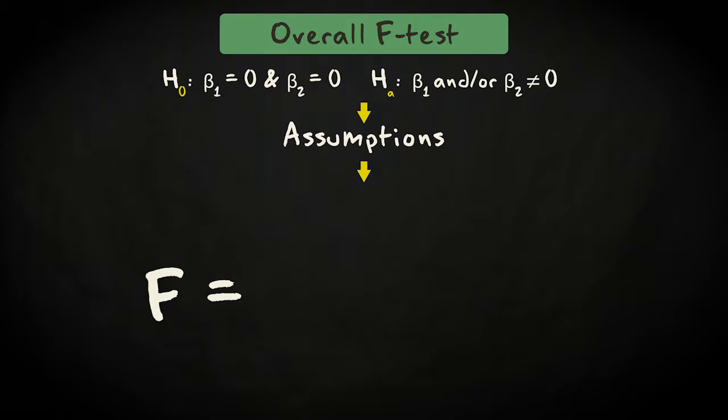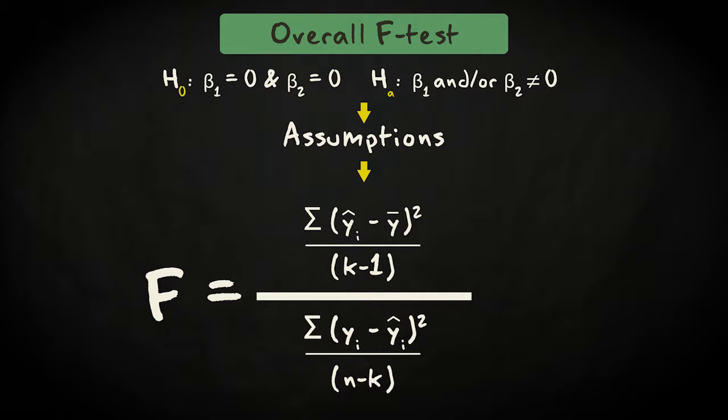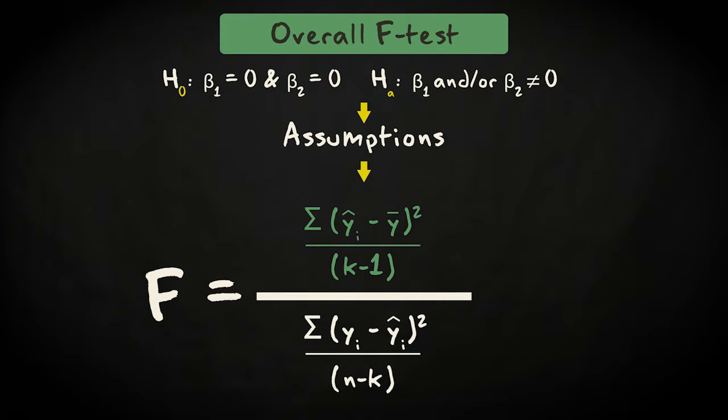To compute the test statistic F, we take the regression and error sums of squares we saw earlier when we calculated r-squared. We turn these sums of squares into variances and divide them. First we divide the regression sum of squares, the variation in the response variable captured by our model, by k minus 1. k is the number of parameters in the model, which equals the number of predictors plus 1 for the intercept.